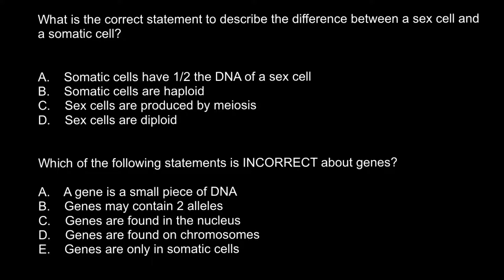Answer A: Somatic cells have one half the DNA of the sex cell. This is not true because somatic cells have double the amount of DNA compared to what can be found in sex cells. Answer B: Somatic cells are haploid. This is also not true — somatic cells are diploid.